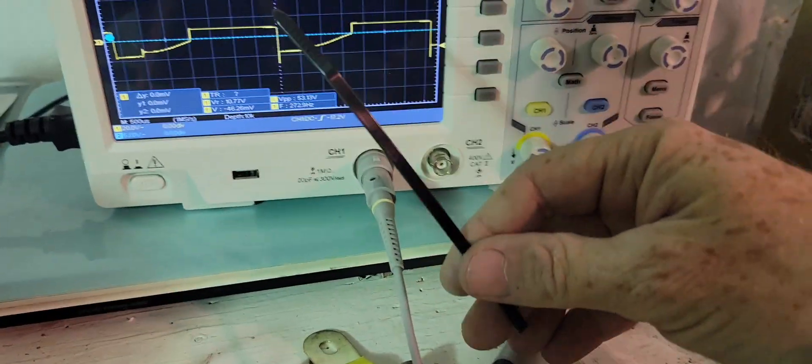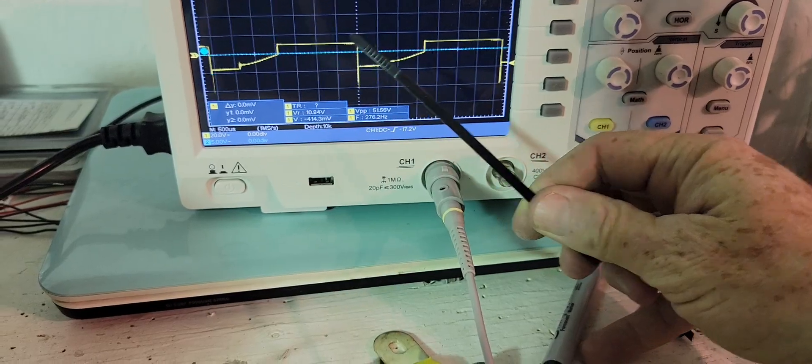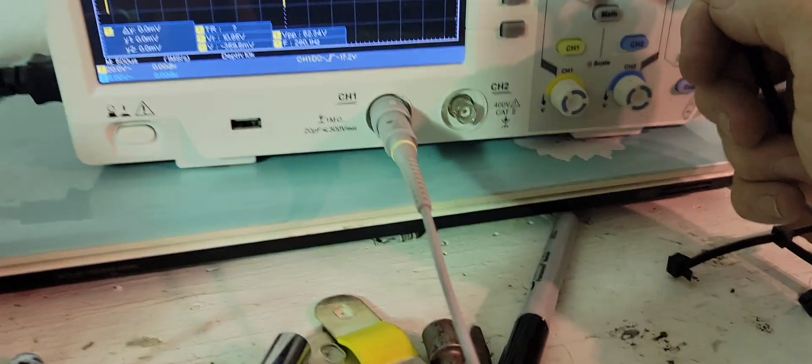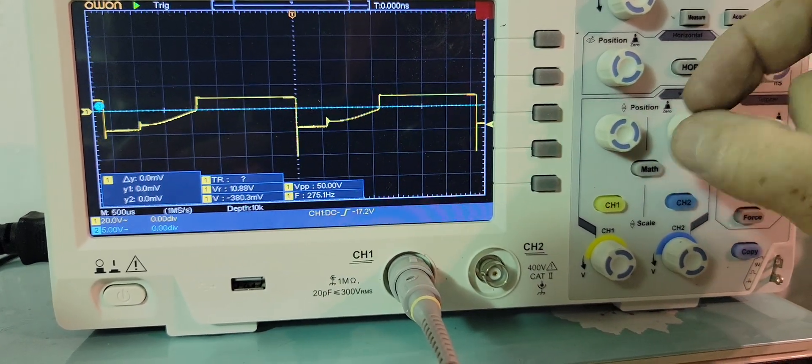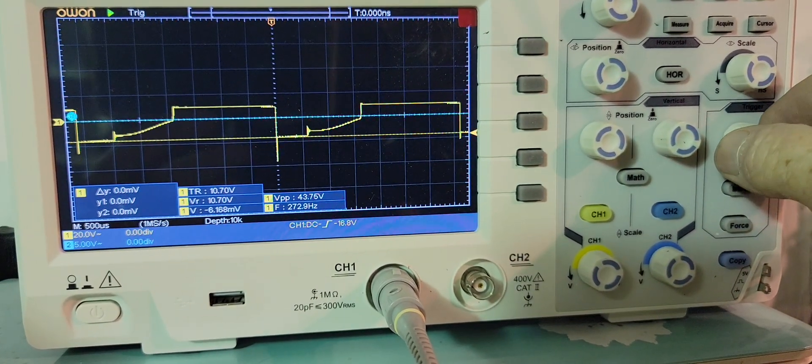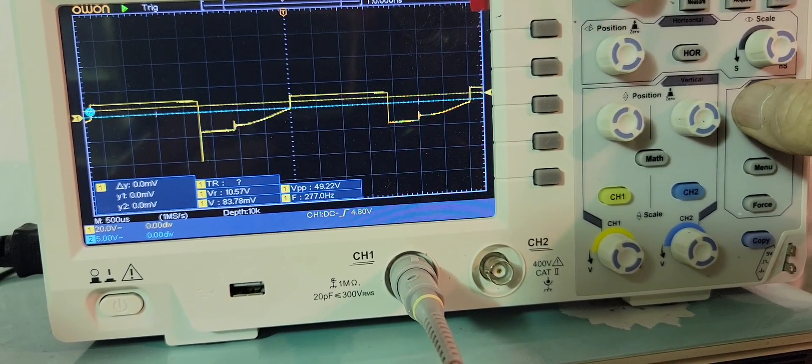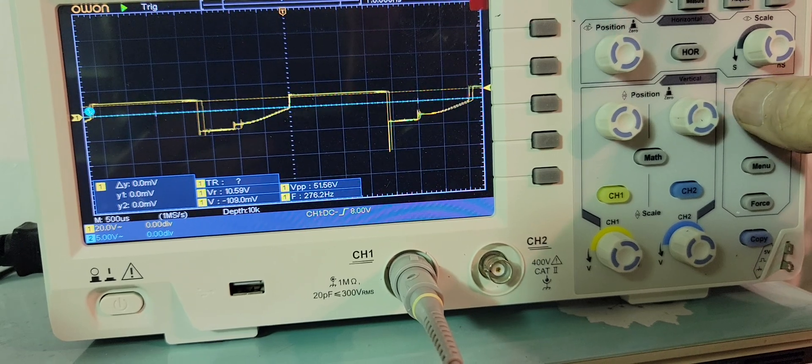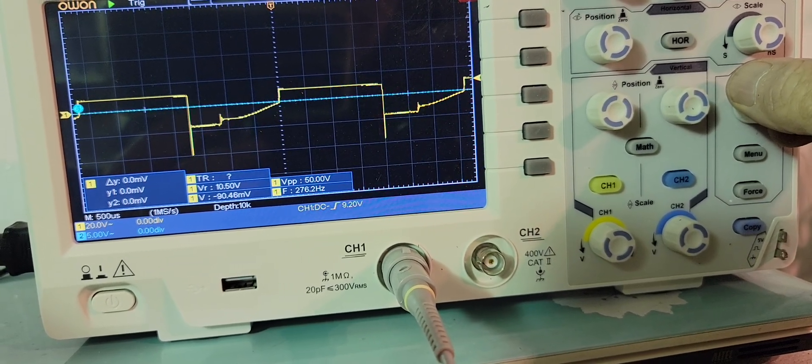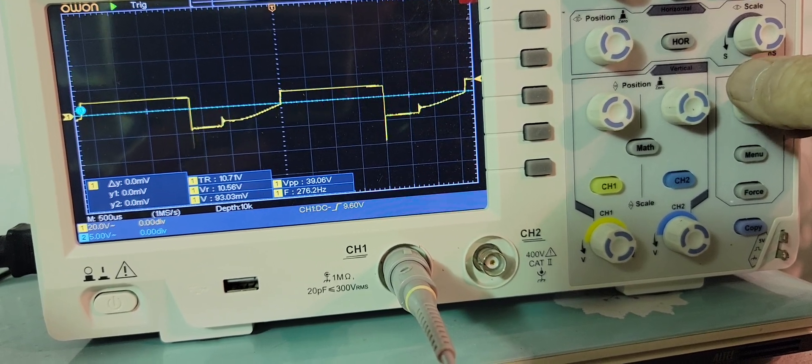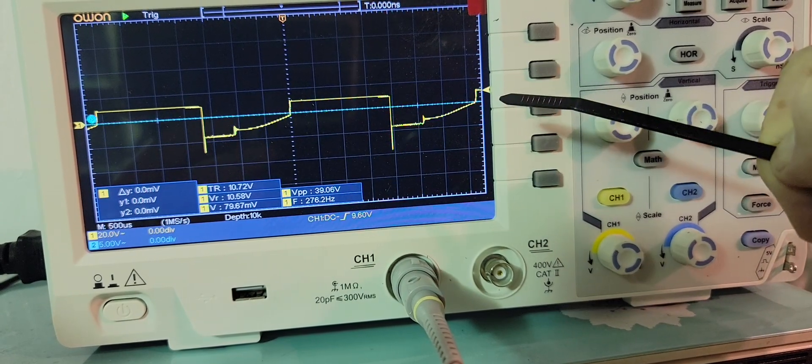Okay, you can see here on the scope this is the input here at the top. Let's measure this. Sorry about there, 9.2 volts is about what the motor is seeing. You can see down there it's measuring that cursor up here.